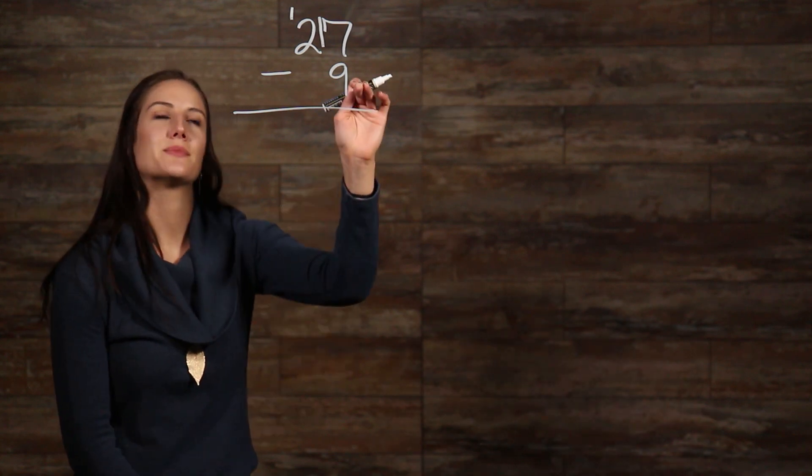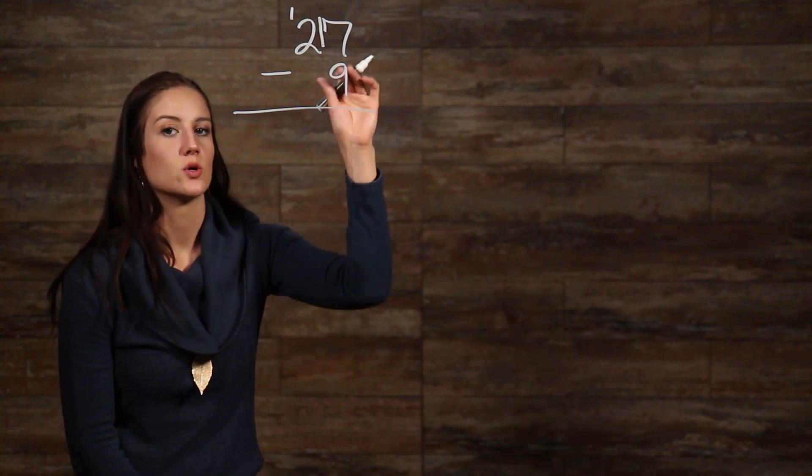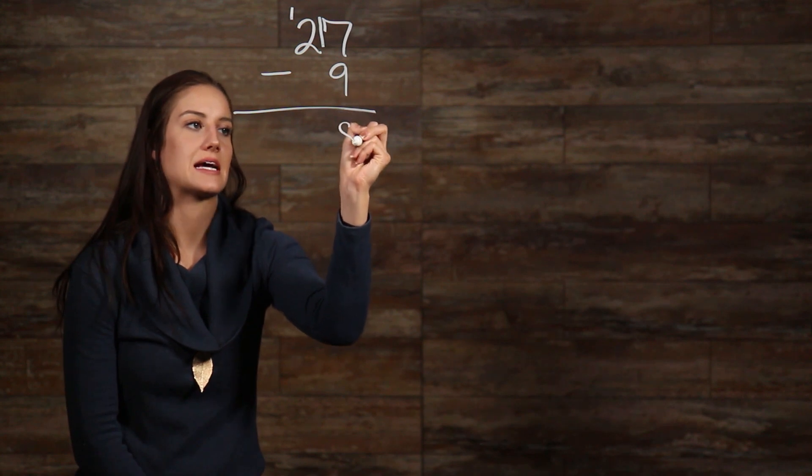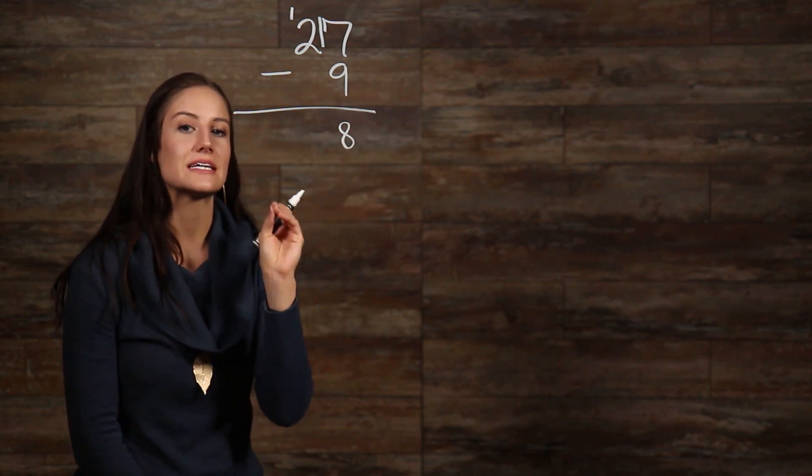So, now we have 9 being subtracted from 17, which gives us 8. So, we'll bring our 8 down, and again, we want to keep our number place values aligned.